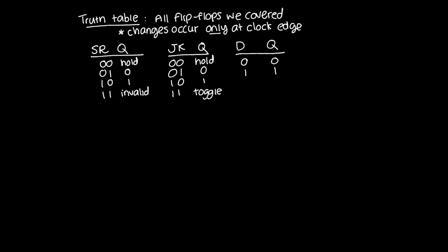This may at first look useless, but it's actually a very basic memory element with lots of applications. In this video we covered three flip-flops: SR, JK, and D. There's also a T (toggle) flip-flop — essentially a JK flip-flop where J and K are wired together — but we don't need to cover that now. The differences between the flip-flops are laid out in their truth tables. Note that Q-bar is always the complement of Q, and the clock input is always implicit.